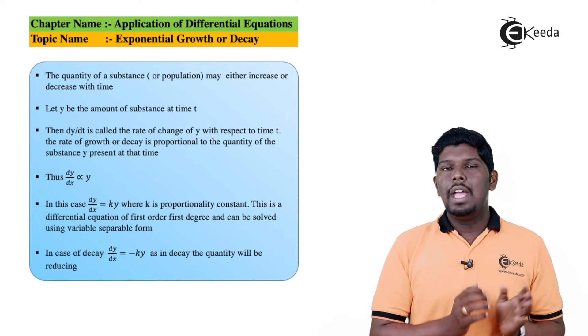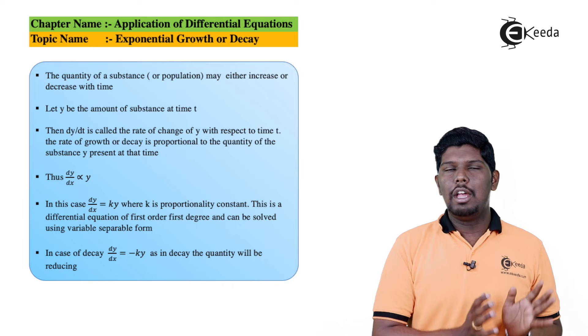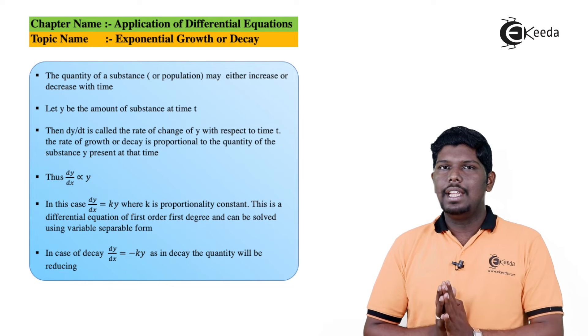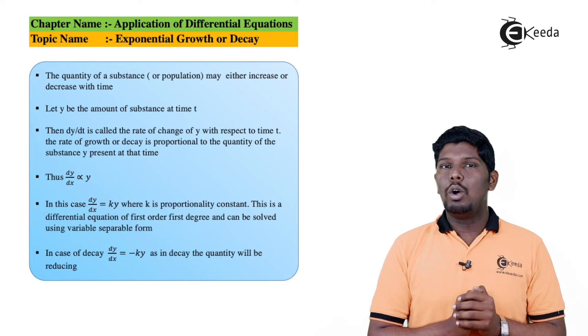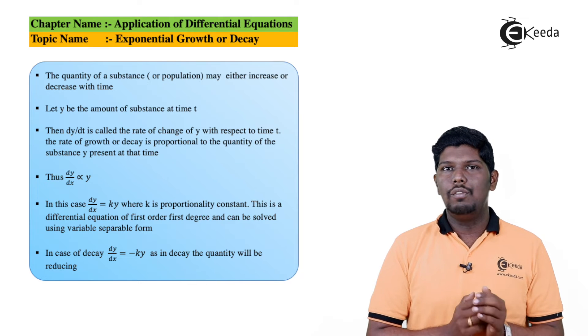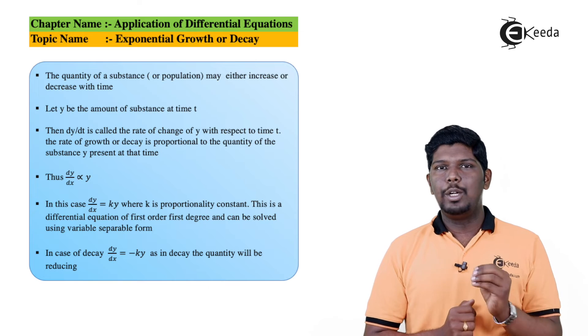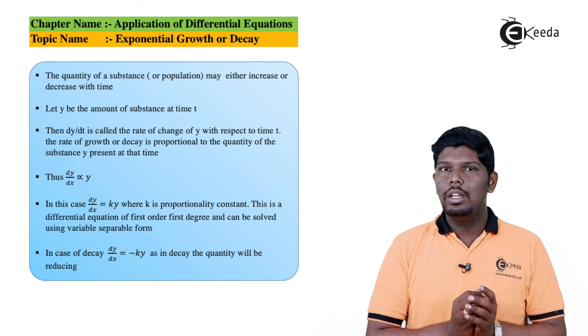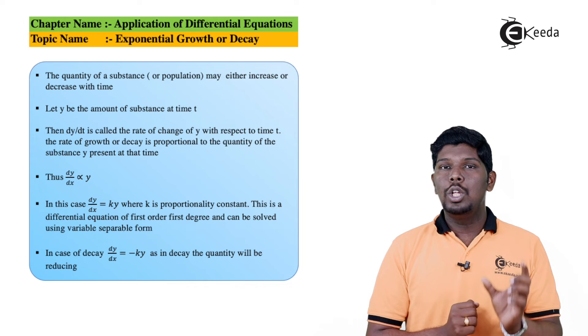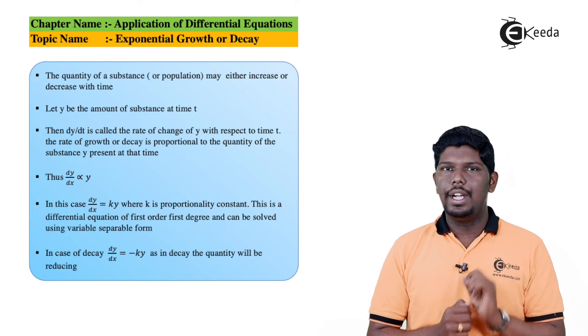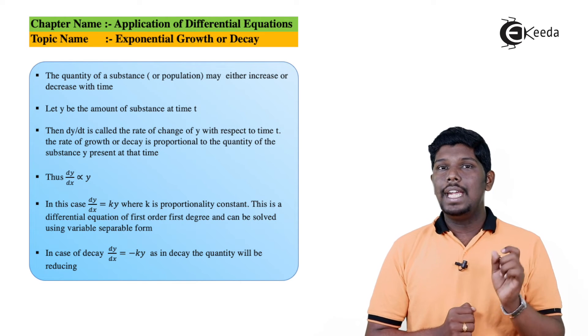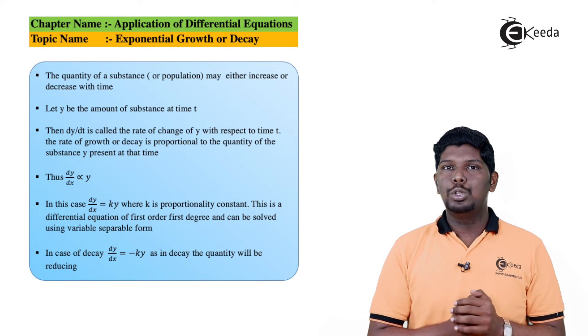If I say we have two cases: in the first case we have population of 10,000 and in the second case we have a population of 20,000. It is obvious that the rate of increase of population will be higher in the second case. So whenever we say a change in y with respect to time t, that will be proportional to the original population or the original quantity. So we have taken dy by dt as directly proportional to y.